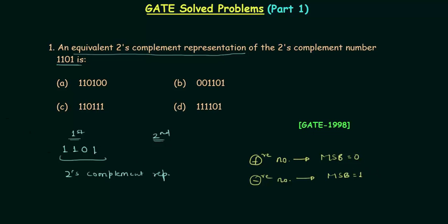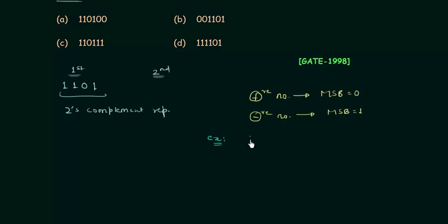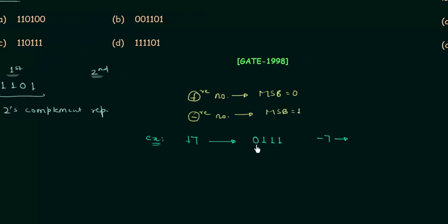Let's take one example to understand this. We want to represent +7 in 2's complement. First we write down the magnitude: 111, which represents 7, and to indicate positive the MSB is 0. So 0111 represents +7. To represent -7, we first write the 1's complement of 0111, which is 1000, then add 1 to get 1001. So 1001 is the 2's complement representation of -7.